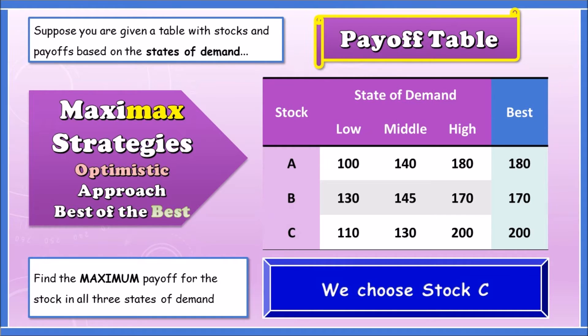That's it guys, hope this helped. Let me know if this was clear or if you need any further examples. The idea is: you maximize the best one for maxi-max, and you maximize the worst for maxi-min. Really simple stuff — have a good day, adios amigos!